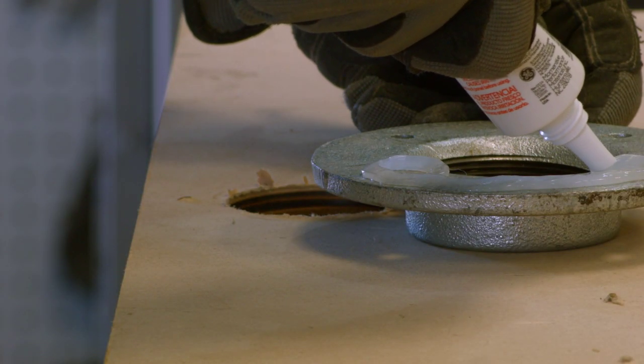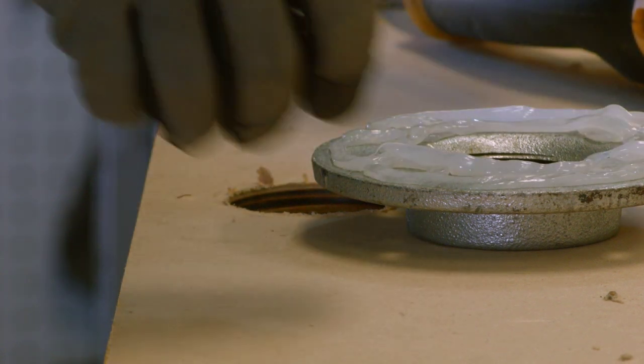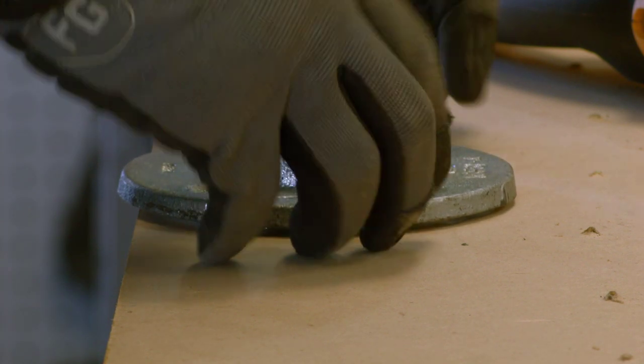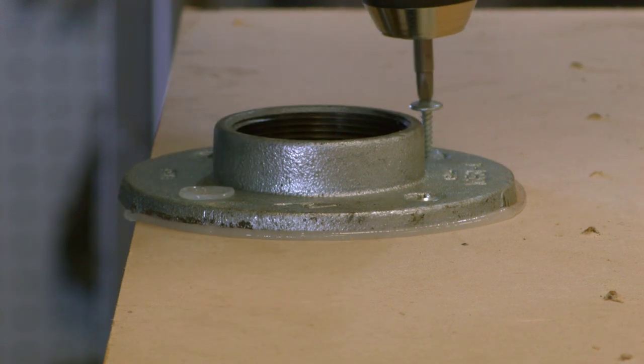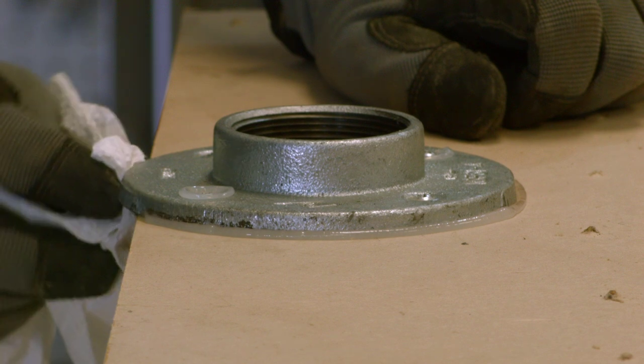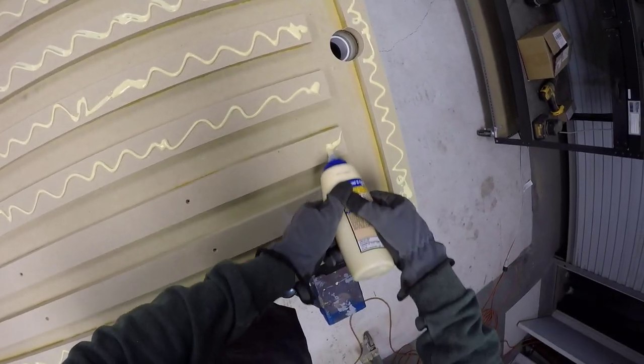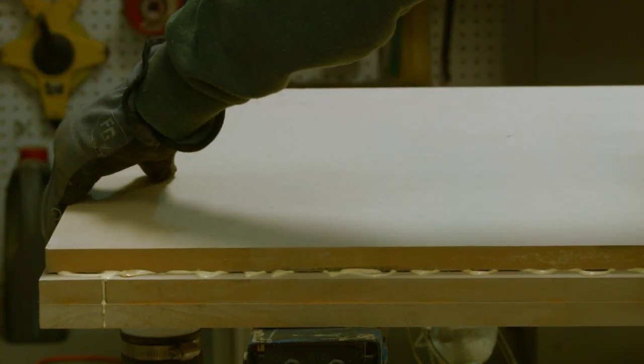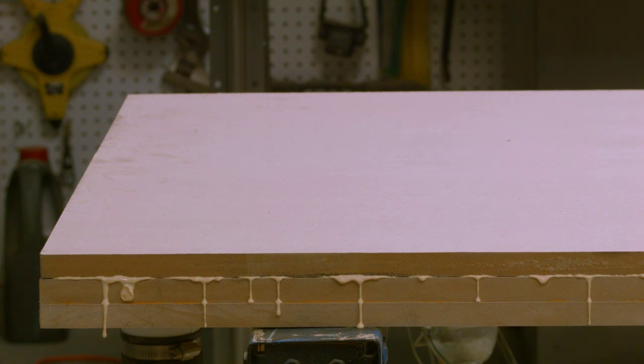I seal up the pipe flange with silicone and attach it. I'll hook up the vacuum to hold down the top sheet while the glue sets. You can see the vacuum pull the top sheet down tight to the frame.